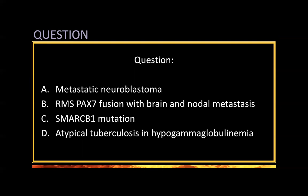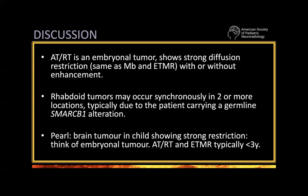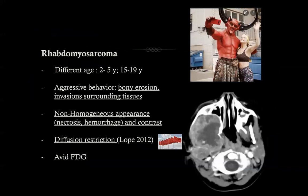30 seconds past. The answer is: this is an ATRT with synchronous orbital rhabdoid tumor due to SMARCB1 mutation. It is not a rhabdomyosarcoma — it is a malignant rhabdoid tumor. The combination of these two masses is associated with a germline SMARCB1 mutation giving an embryonal tumor in the brain and outside the brain. Remember: embryonal tumors in the brain can have a complete lack of enhancement but will always show diffusion restriction. Intracranially, trust restriction first. Remember that ATRT, medulloblastoma, and ETMR (embryonal tumor with multilayered rosettes) are the main embryonal tumors found in the child brain.